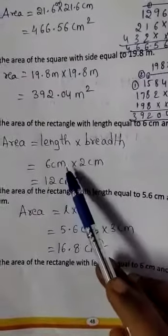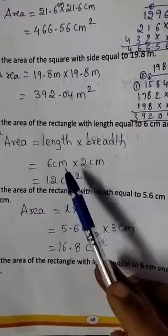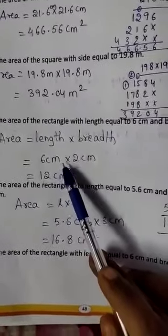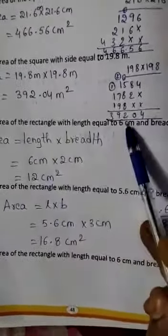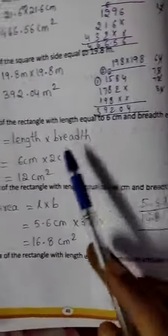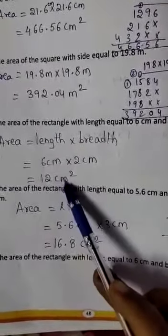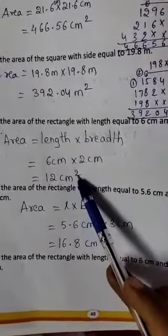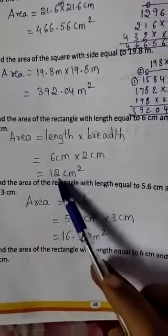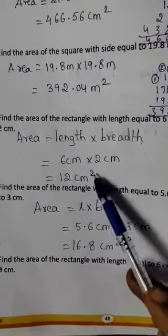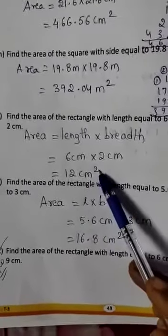We must use the unit method. So, 6 cm into breadth 2 cm. So, 6 twos are 12 cm square. The answer is 12 cm square.